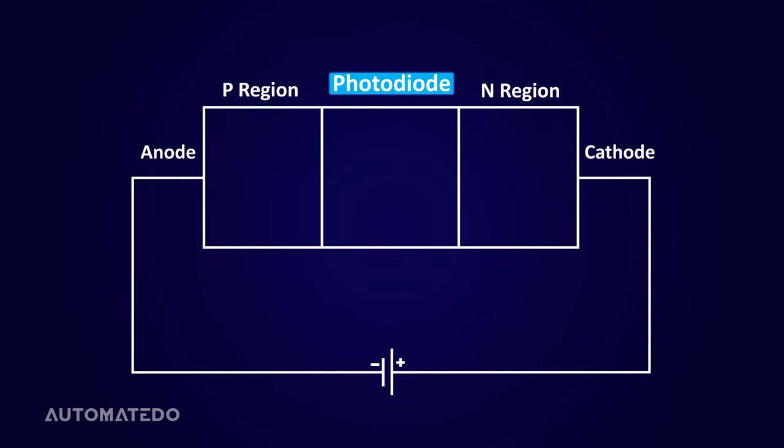If you are familiar with diodes, you know that in a PN junction, the P region's majority carriers are holes and the N region's majority carriers are electrons.